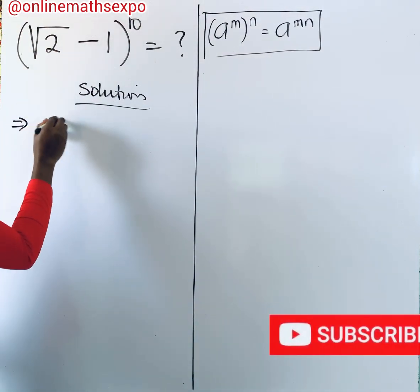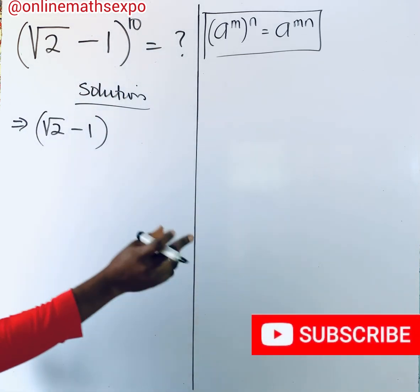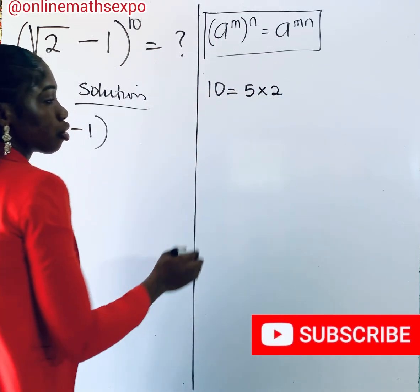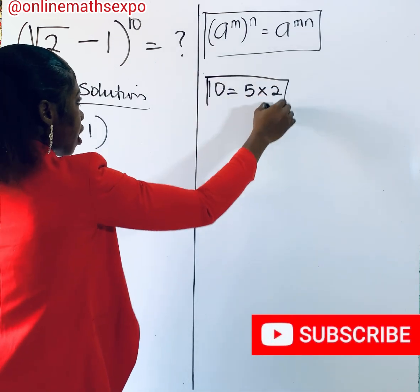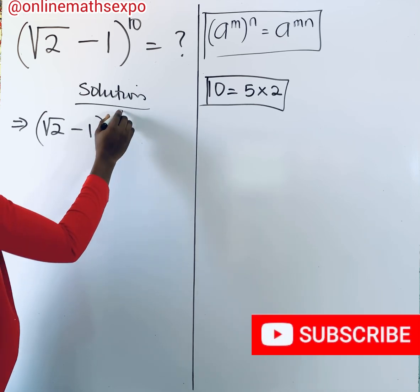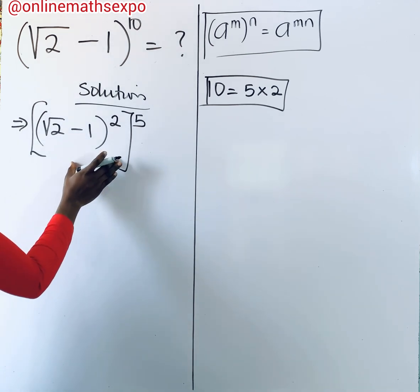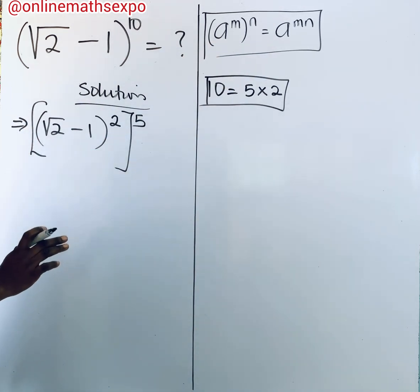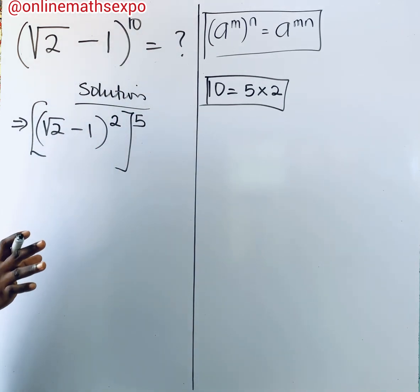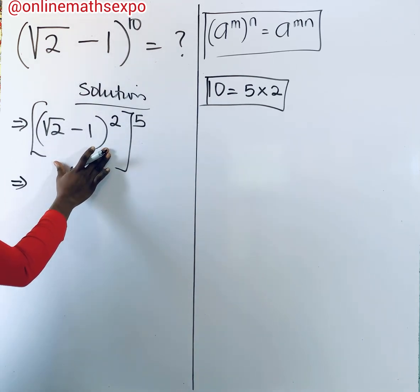We bring this down: we have root 2 minus 1, and for this power of 10 we know that 10 is the same as 5 multiplied by 2. So we're going to use this to simplify. We can raise the expression to the power of 2 and then raise to the power of 5. When you multiply those powers it gives you back 10, so we haven't changed anything.